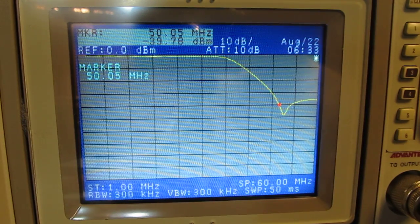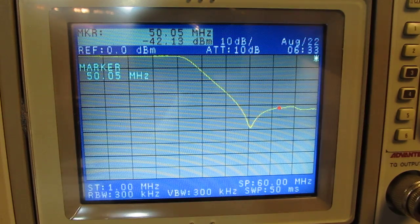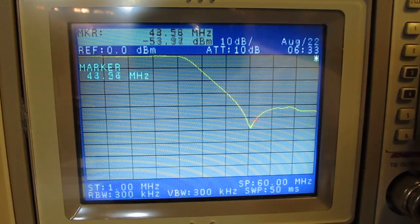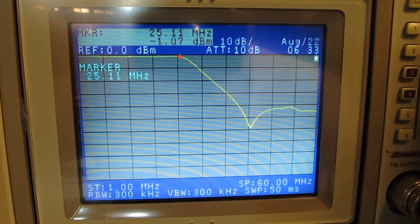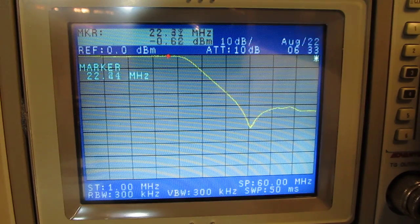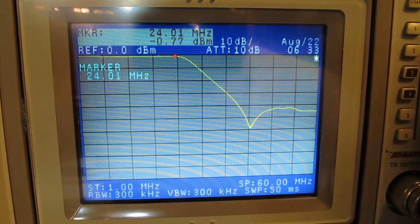I'm going to switch the filter bank now to the 15 and 17 meter position because that's 21 megahertz and about 18 megahertz. If we look at 18 megahertz and 20 megahertz, 21 megahertz, we're certainly nice and flat up through the 15 meter band.